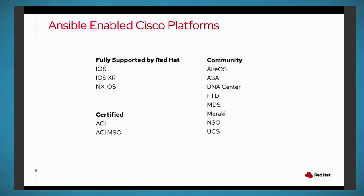Let's talk about Cisco. We have a lot of platforms — ACI, DNA Center, and more. The ACI team has been great in migrating over to collections, and that's certified. NSO and UCS were certified on 2.9 — they're not yet certified for 2.10 because we haven't built collections yet. We're working with the NSO and UCS teams to get their content migrated. IOS, IOS XR, and XOS are currently fully supported by Red Hat because we help co-maintain and co-develop those with Cisco.